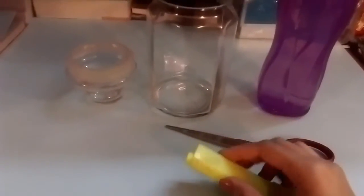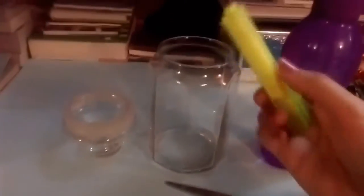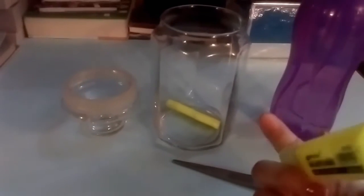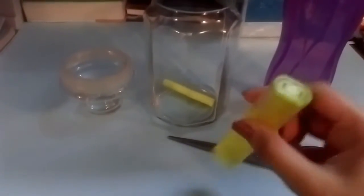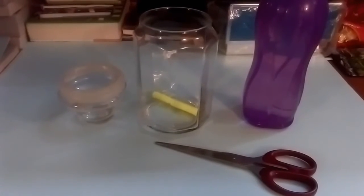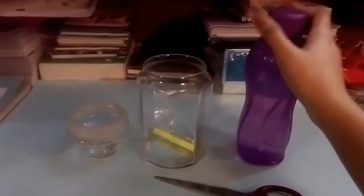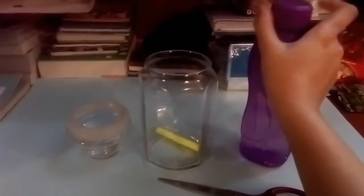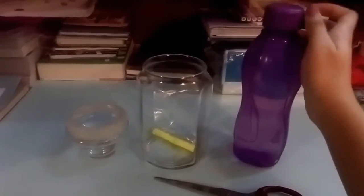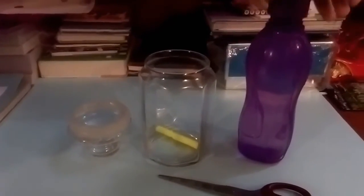We're going to soak this felt in the water for two hours or overnight. I'm just going to pour half a cup of water inside the jar and let it sit. We're using a yellow highlighting marker because yellow glows the brightest in the dark.